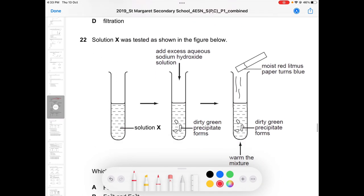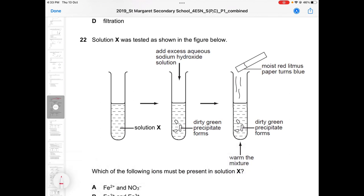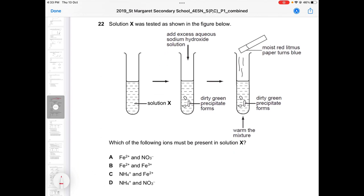The next question is question 22. Those of you who got it wrong chose A. When you see dirty green, you know that it's Fe2+. So you know that D is definitely out. You don't see any reddish brown precipitate, so Fe3+ is also out.